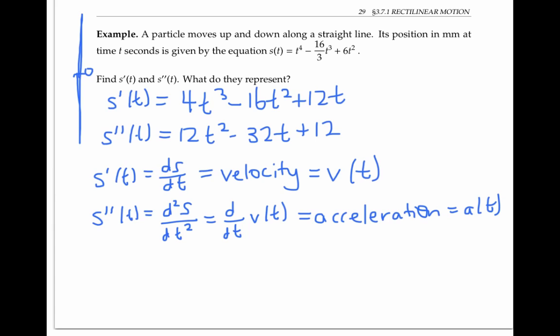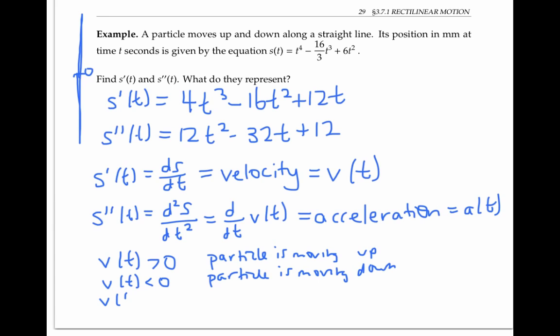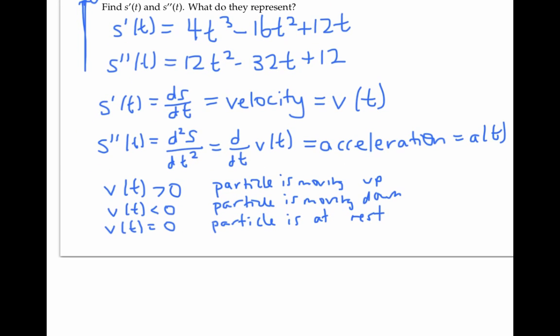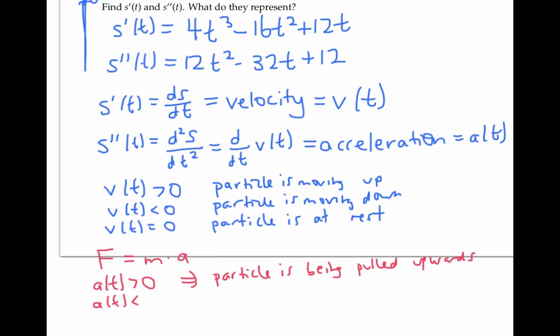Like position, velocity and acceleration can be both positive and negative. A positive velocity means the position is increasing, so the particle is moving up, while a negative velocity means the position is decreasing, so the particle is moving down. A velocity of zero means the particle is at rest, at least for that instant. From physics, force equals mass times acceleration. So if the acceleration is positive, the force is in the positive direction — it's like the particle is being pulled up. If the acceleration is negative, the force is in the negative direction, pulling the particle down. An acceleration of zero means there's no force on the particle at that instant, and the velocity continues as is.